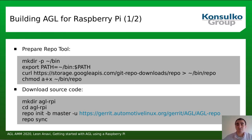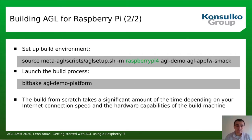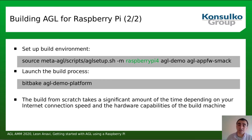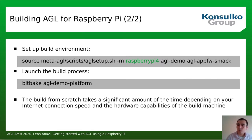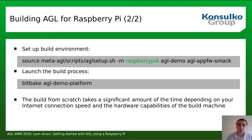The next step is to set up the build environment using the AGL setup script, specifying Raspberry Pi 4 as the machine and a list of Raspberry Pi features to enable. For a basic demo image I'm specifying only the 'agl-demo' and 'agl-appfw-smack' features. Finally, the build process is launched with BitBake. 'agl-demo-platform' is the most commonly used image, but many other images are supported.